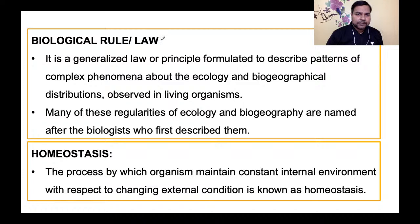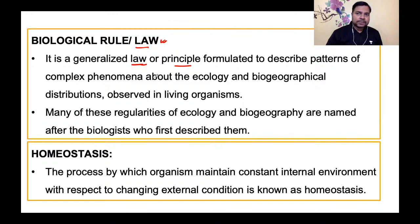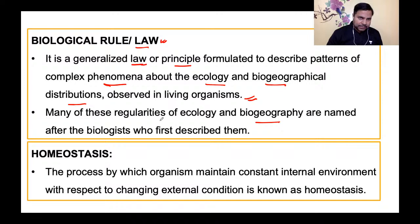ये rules certain scientific principles पे based हैं। पहले हम उस scientific principle को पढ़ेंगे, फिर various rules के बारे में जानेंगे। Biological rules या laws — ये generalized law या principle या rule of thumb होते हैं जो ecology and biogeographical distribution के complex phenomena के patterns describe करने के लिए formulate किए गए हैं। Many of these regularities are named after the biologist who discovered them।